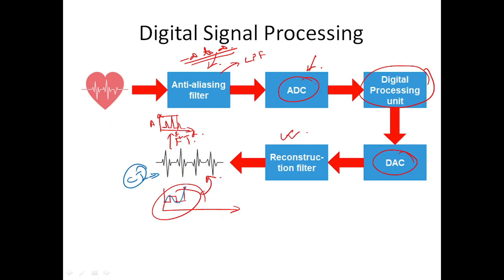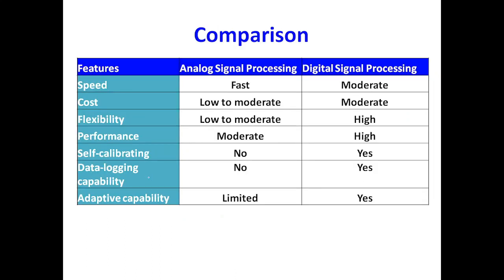Additionally, if a signal is saturated — say you have a ±10 V signal but the op-amp saturates at ±8 V — the signal gets clamped, and information above those limits is permanently lost. Microprocessors typically work in the ±5 V range, so you must ensure signal amplitude stays within the working limits. Exceeding the limit causes clipping, and that information is irretrievably lost once digitized.